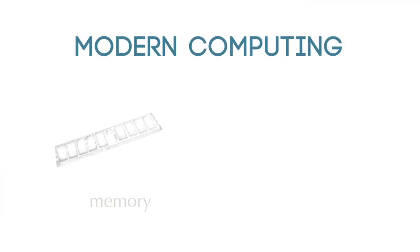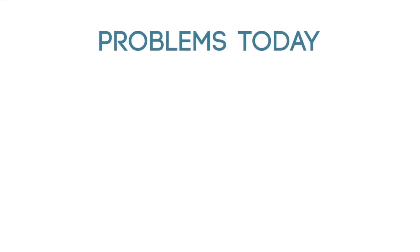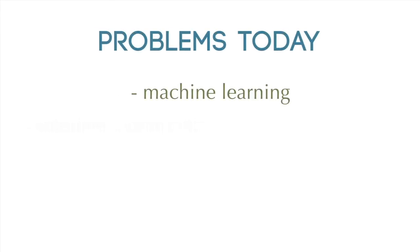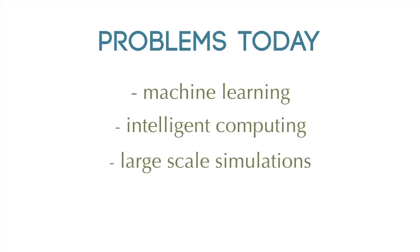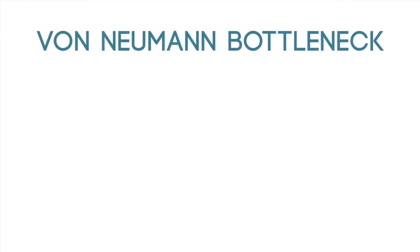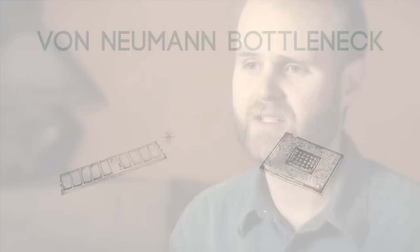So why do we need a new type of adaptive computing substrate? Modern computing is based on a separation of memory and processing and requires that we constantly shuttle information back and forth as we execute a program. But for problems like machine learning, intelligent computing, or large-scale simulations of nature, we just can't shuttle information any faster — it takes too long and consumes far too much energy. It's just not practical.